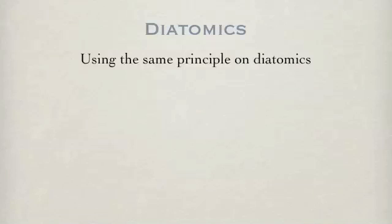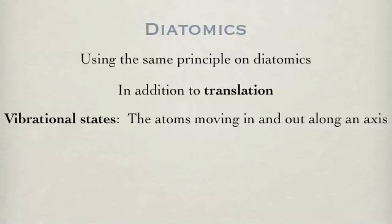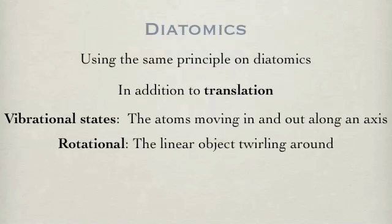The same principle can be applied to diatomics. Diatomics have not only a translational degree of freedom, they also have additional degrees of freedom. There are two vibrational degrees of freedom of the atoms moving along a line, and there are also two rotational degrees of freedom.